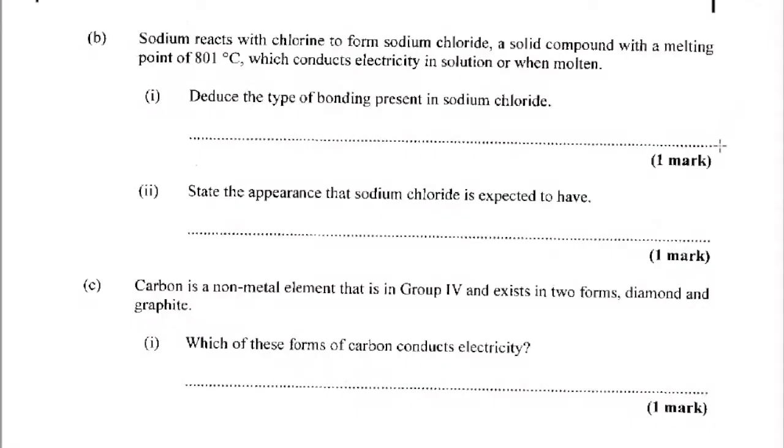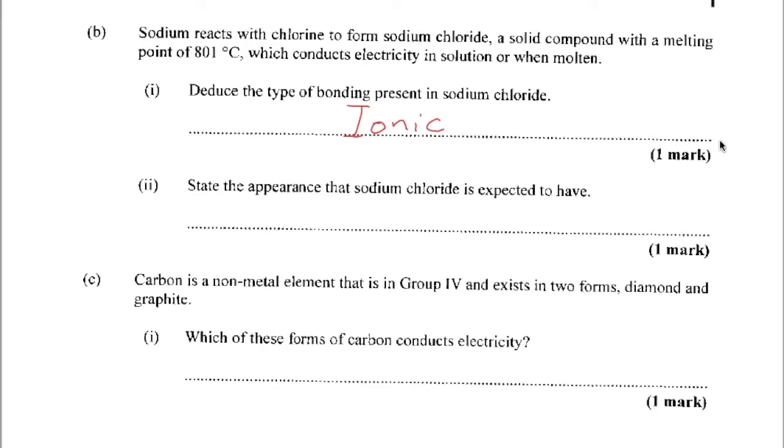Part B. Sodium reacts with chlorine to form sodium chloride, a solid compound with a melting point of 801 degrees Celsius, which conducts electricity in solution or when molten. Deduce the type of bonding present in sodium chloride. I don't know if we're going to deduce or we just know it because sodium is a metal, chlorine is a non-metal. If we're approaching it that way, then we're deducing. The bond is ionic. State the appearance that sodium chloride is expected to have. It's supposed to be a white crystalline solid.